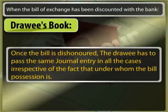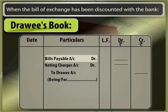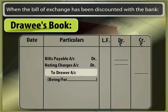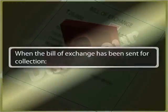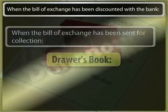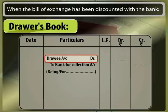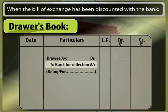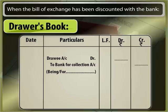In the drawee's book, once the bill is dishonored, the drawee has to pass the same journal entry in all cases, irrespective of the fact under whose possession the bill is. Drawee account is debited with the full value of the bill and noting charges, to bank account, or to bank for collection account, with the full value of bill and noting charges.